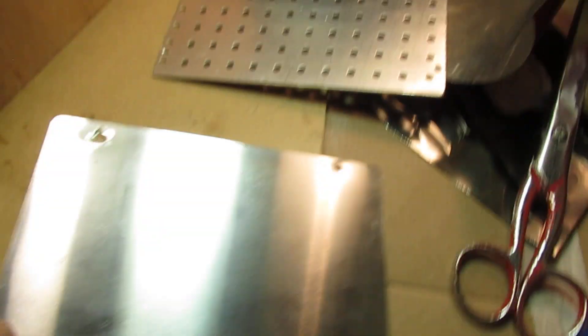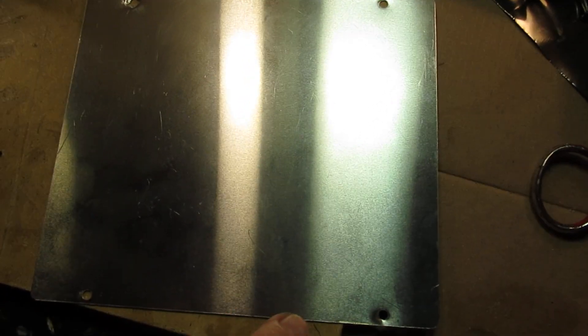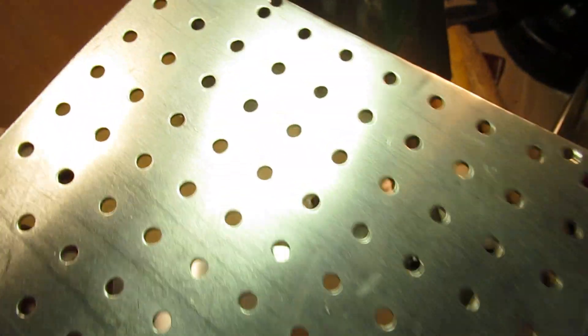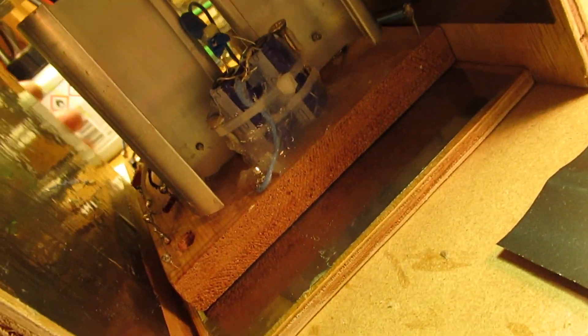This will be the front plate, still have to drill some holes. This is the back plate. The holes are there for ventilation. So this will be the backside of that amplifier.